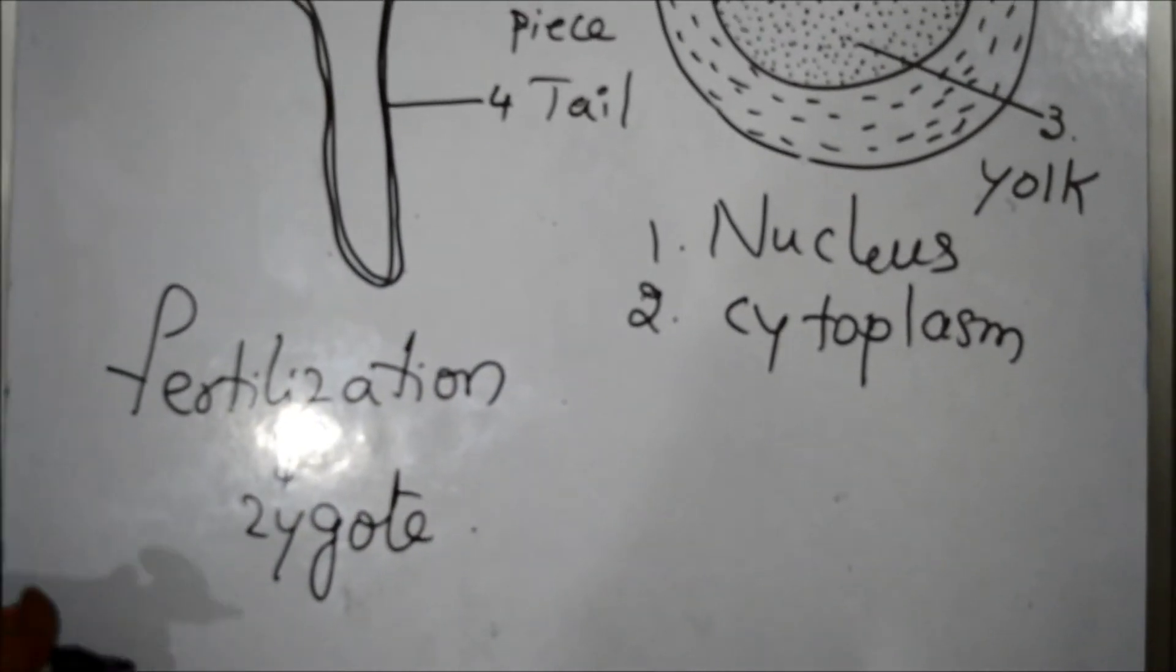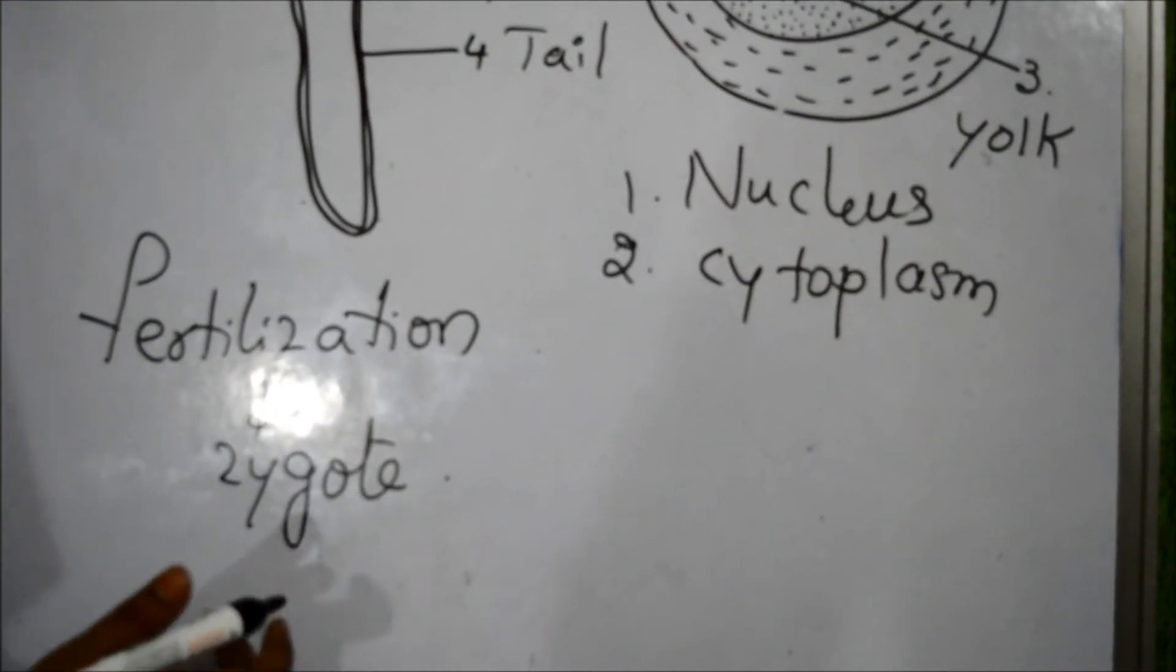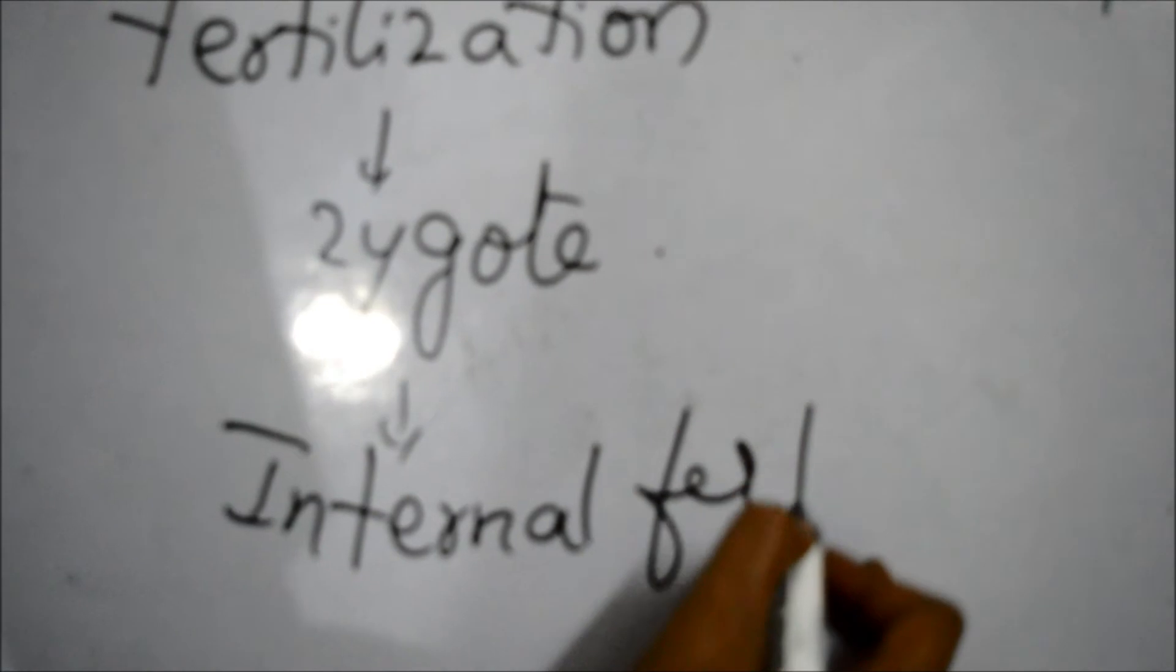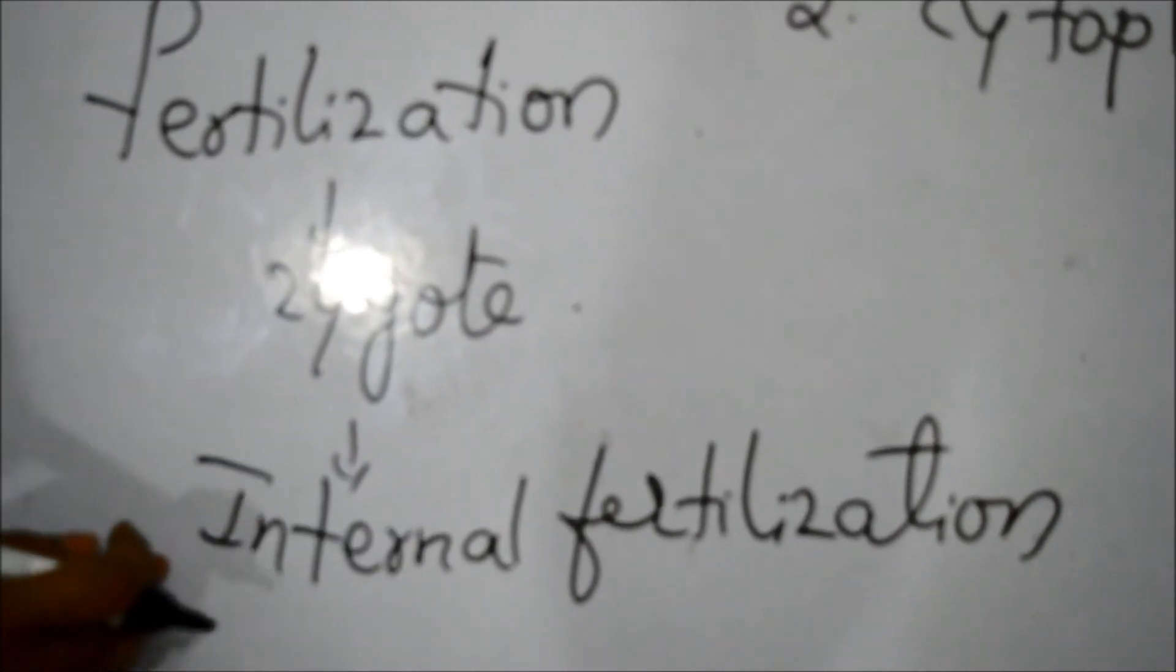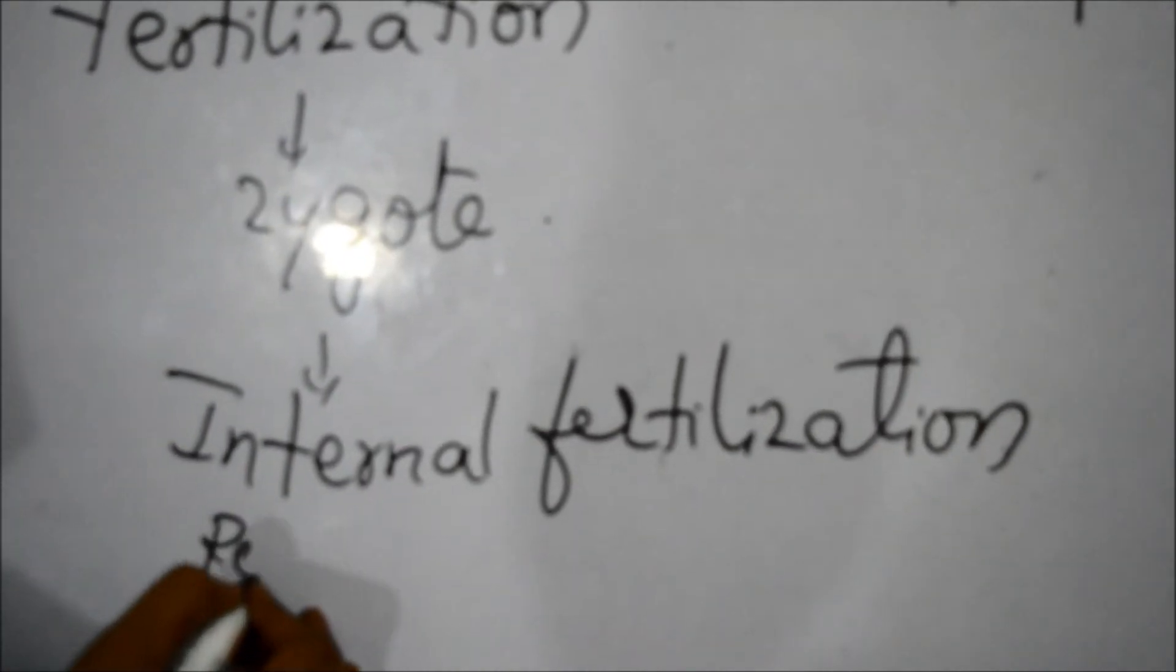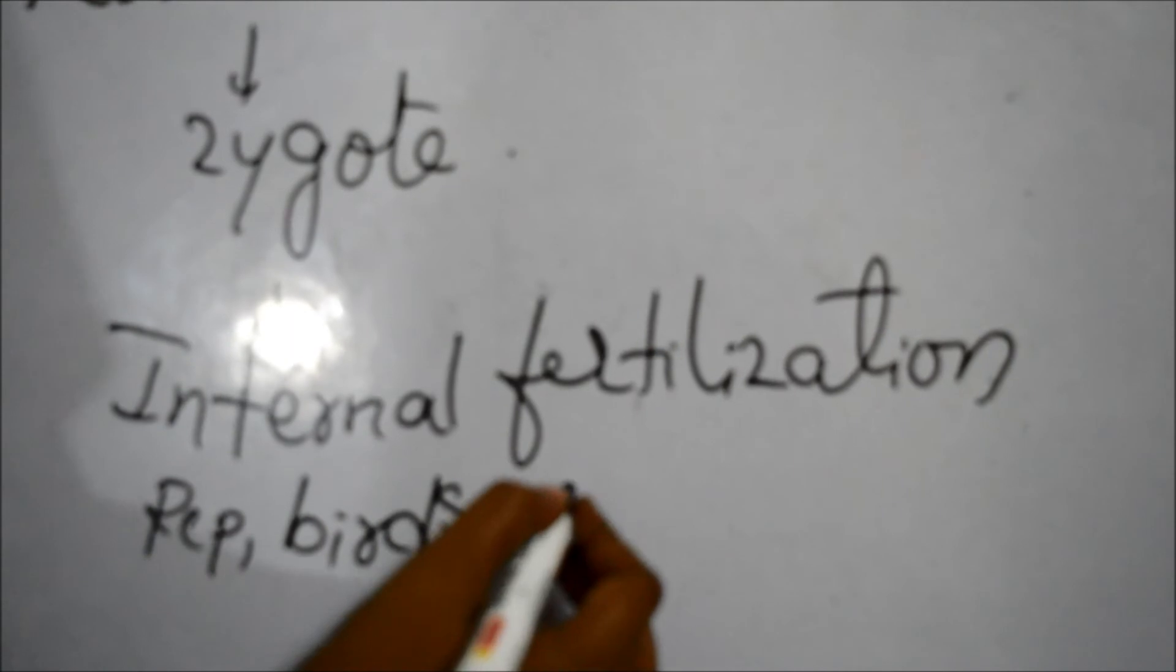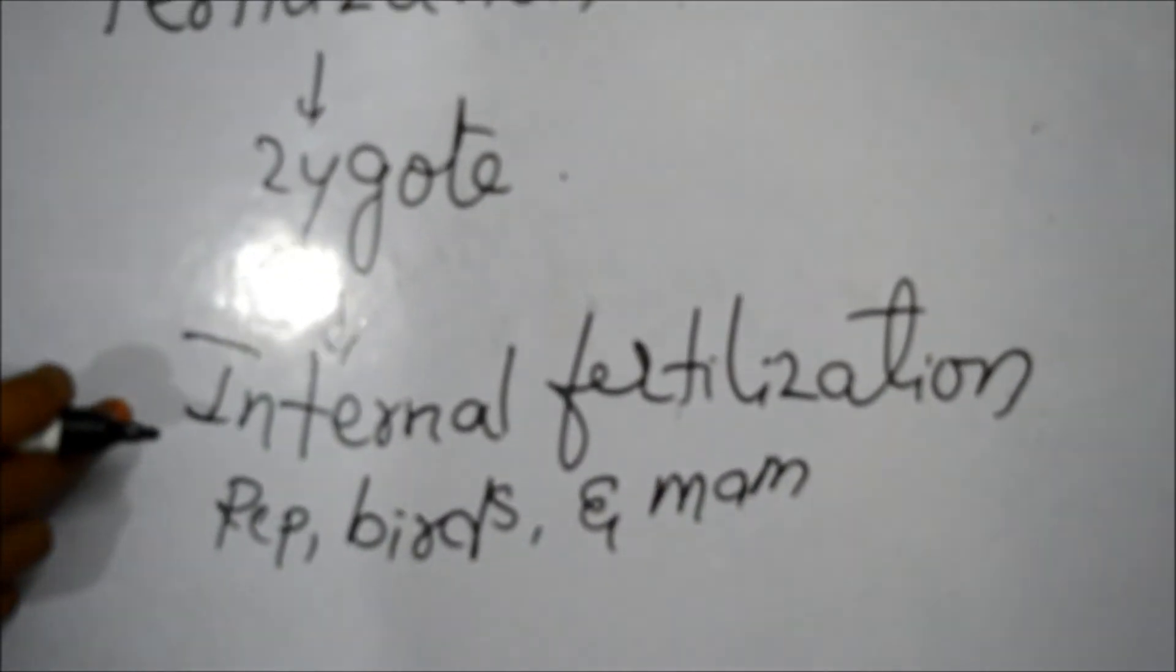If fertilization takes place within the body of female organism, it is called internal fertilization. Internal fertilization means the fertilization takes place inside the female organisms. Examples are reptiles, birds, and mammals which show this internal fertilization.